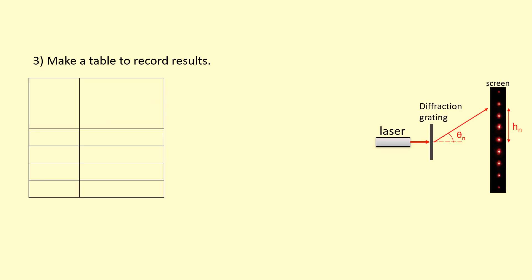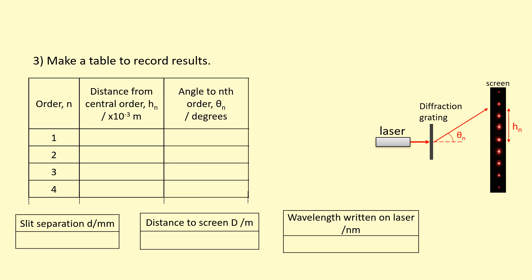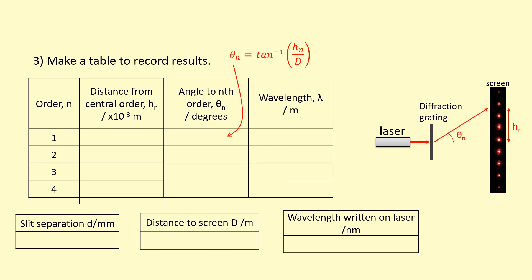You'll need another table for the diffraction grating practical. Record the constants: slit separation (remember you may need to calculate 1 over the number of slits per millimetre to find it), the distance to the screen, and the wavelength written on the laser. Then for each order number, record the distance from the zeroth order to that particular order (H1, H2, H3, and so on). Use those to find the angle using tan inverse of the distance to that order divided by the distance to the screen. Finally, calculate the wavelength for each order using the diffraction grating equation.